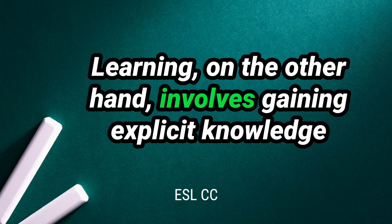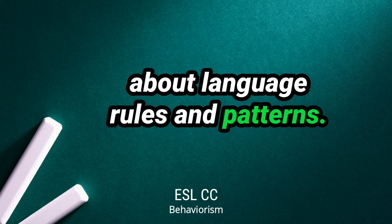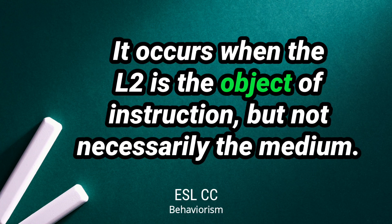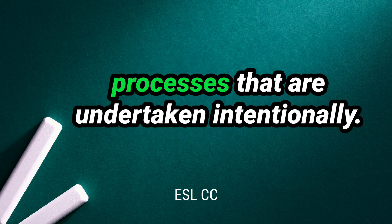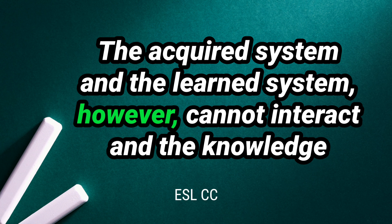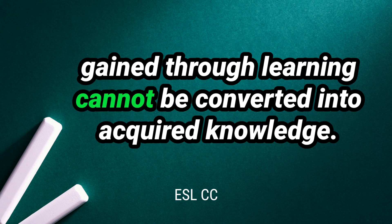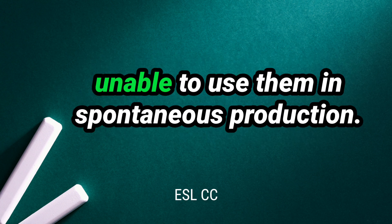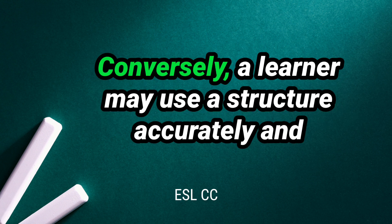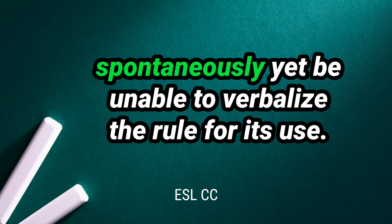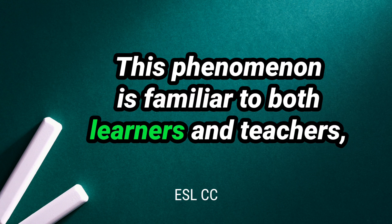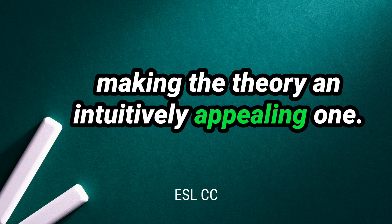Learning, on the other hand, involves gaining explicit knowledge about language rules and patterns. It occurs when the L2 is the object of instruction, but not necessarily the medium. This knowledge is conscious and requires effortful processes that are undertaken intentionally. The acquired system and the learned system cannot interact, and the knowledge gained through learning cannot be converted into acquired knowledge. This is why learners may know grammar rules but may be unable to use them in spontaneous production. Conversely, a learner may use a structure accurately and spontaneously yet be unable to verbalize the rule for its use. This phenomenon is familiar to both learners and teachers, making the theory an intuitively appealing one.